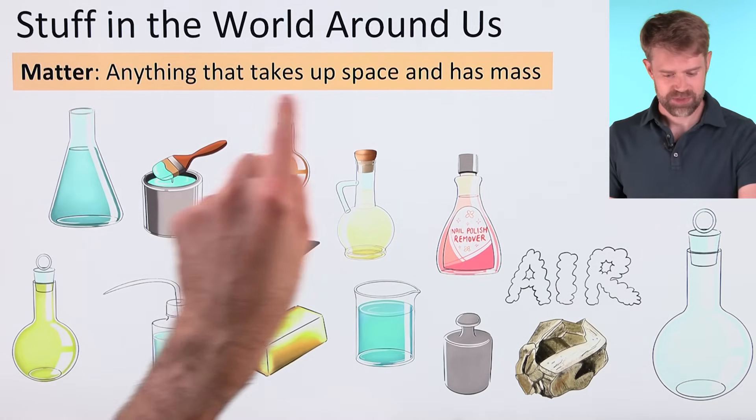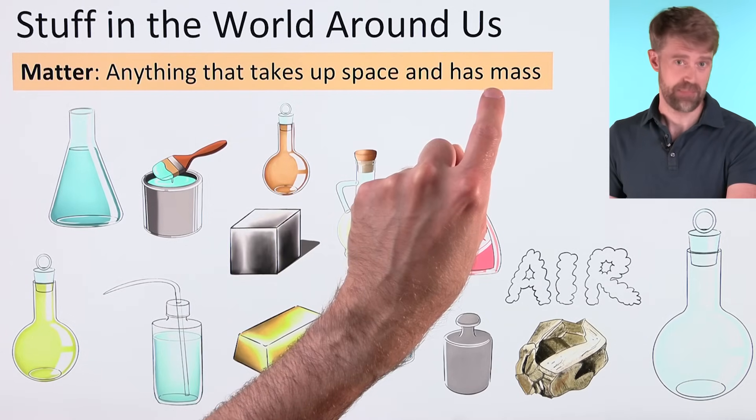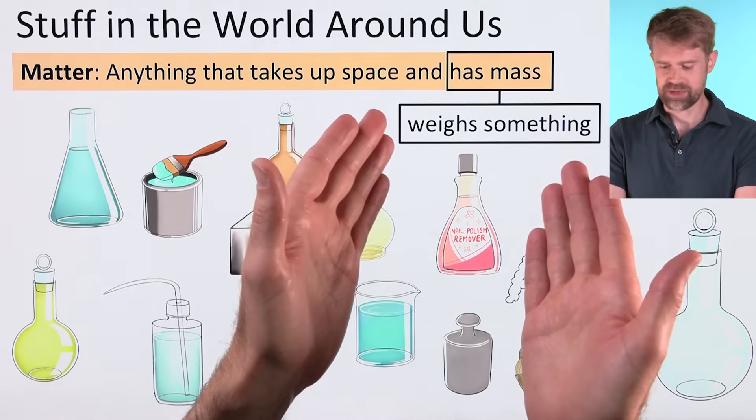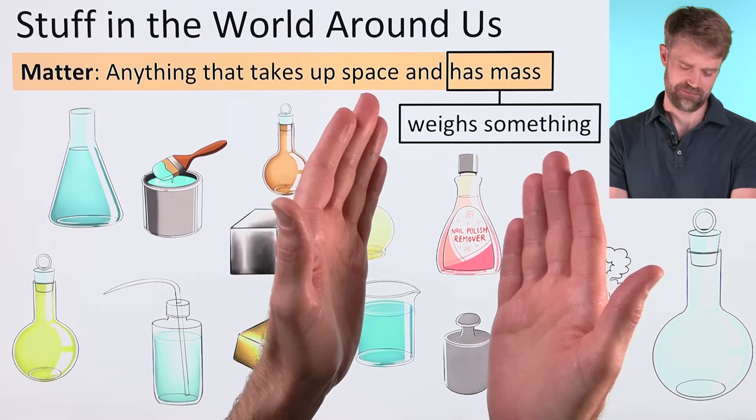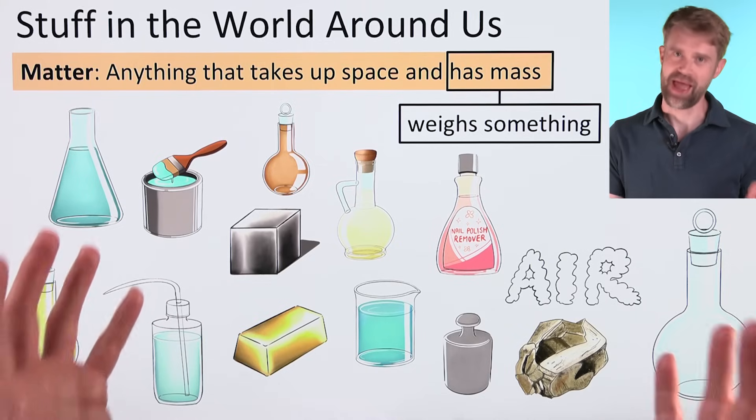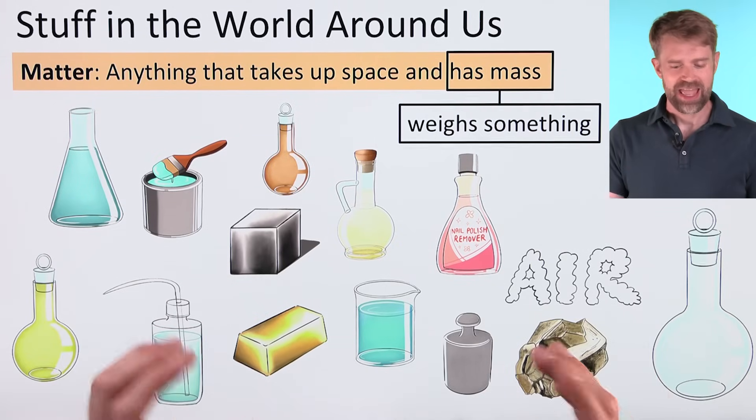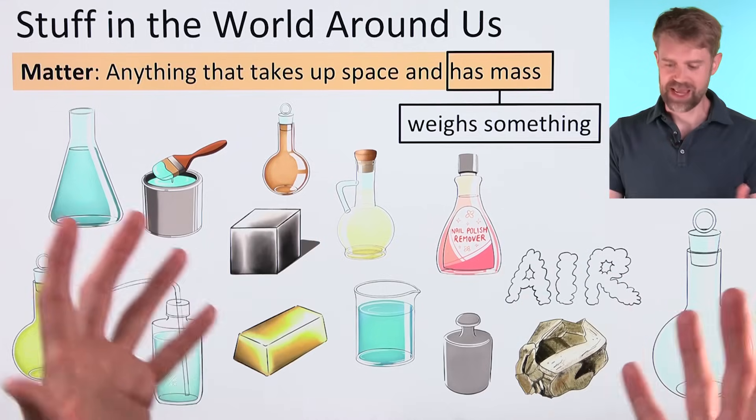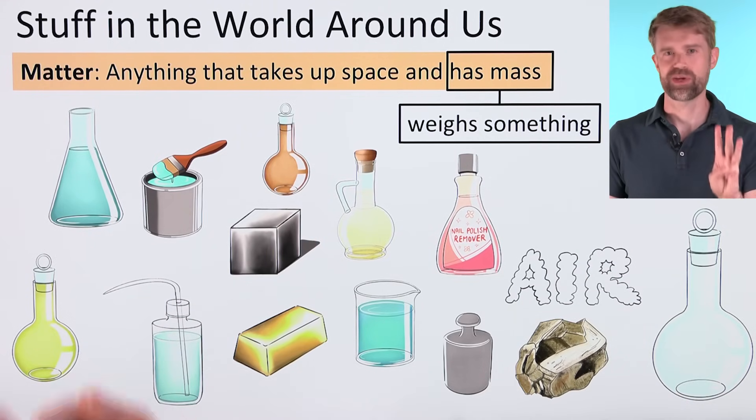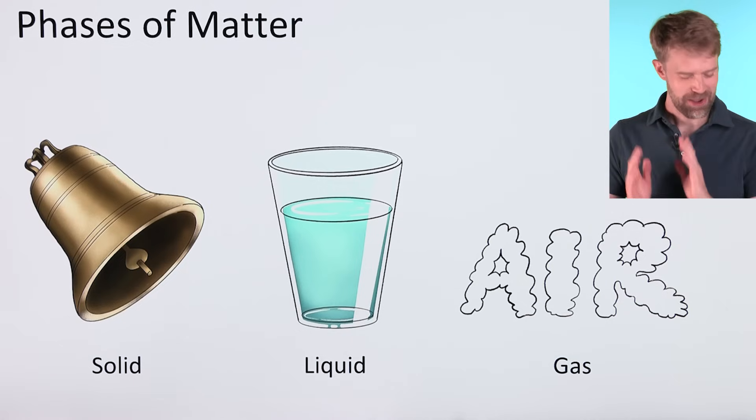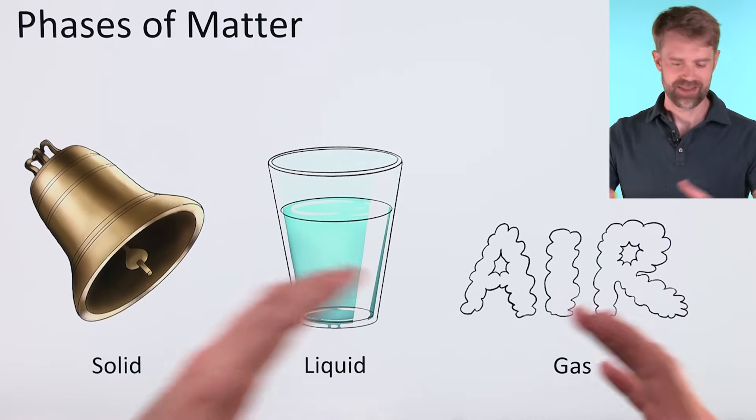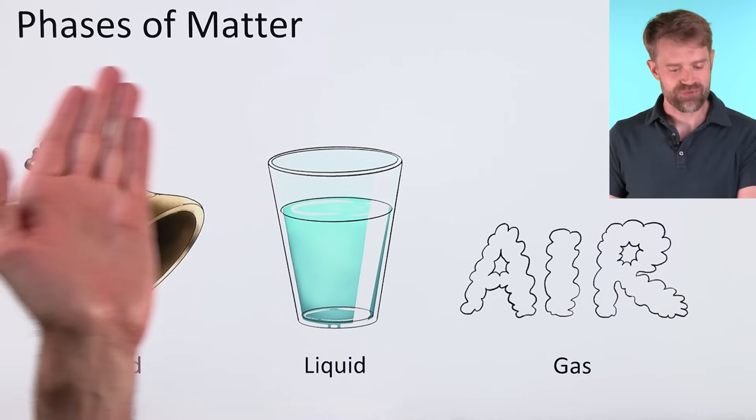It's anything that takes up space and has mass. Has mass might sound a little unfamiliar, so that just means that it weighs something. All this stuff takes up space, it weighs something, so it's matter. If we look at all these different examples of matter, we can put almost everything into one of three categories. Matter can be a solid, a liquid, or a gas. These categories are known as the phases of matter.